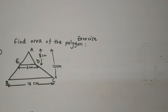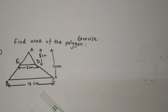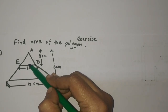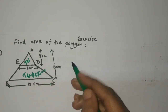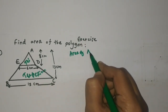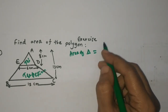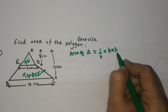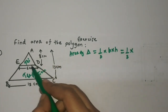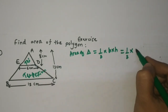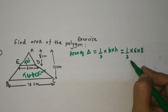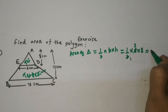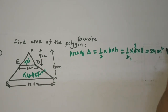In the exercise, we need to find the area of a given polygon. Looking carefully, the polygon consists of one triangle and one trapezium. First, we find the area of the triangle using ½ × base × height. The base of the triangle (ED) is 6 cm and the height is 8 cm, giving ½ × 6 × 8 = 24 cm².